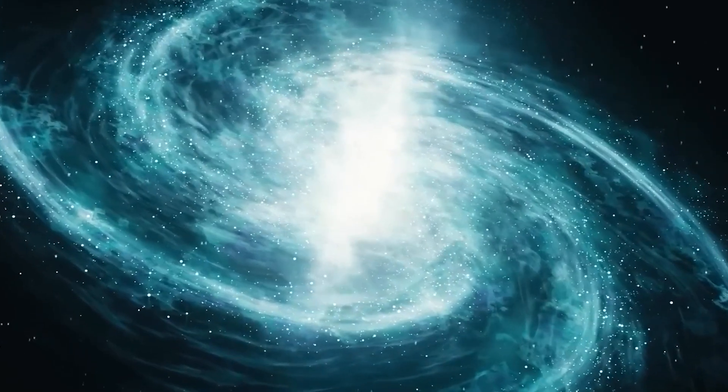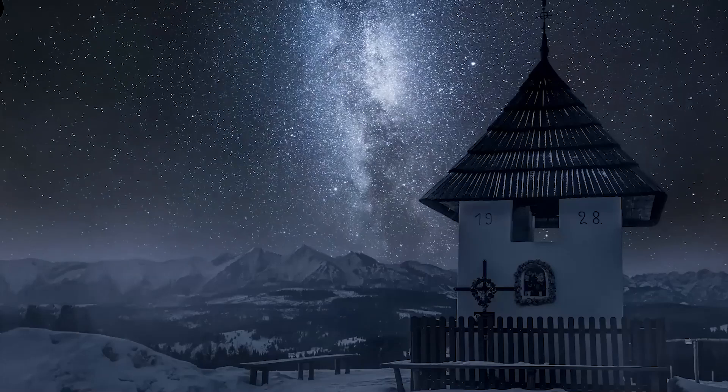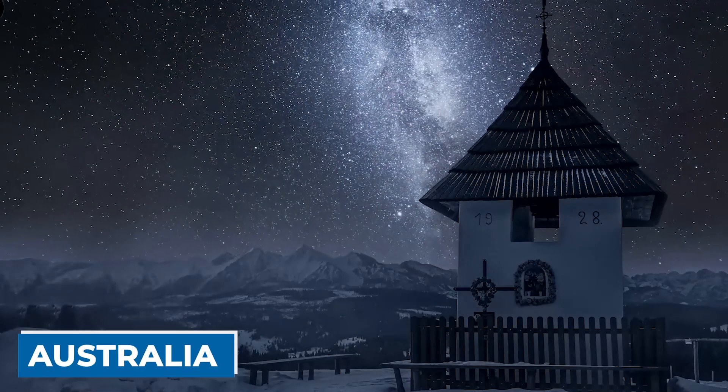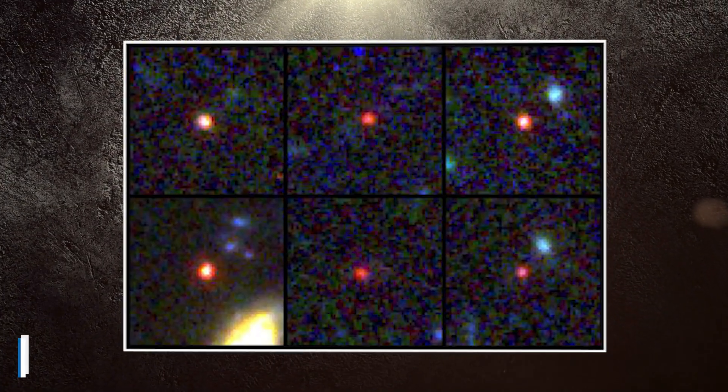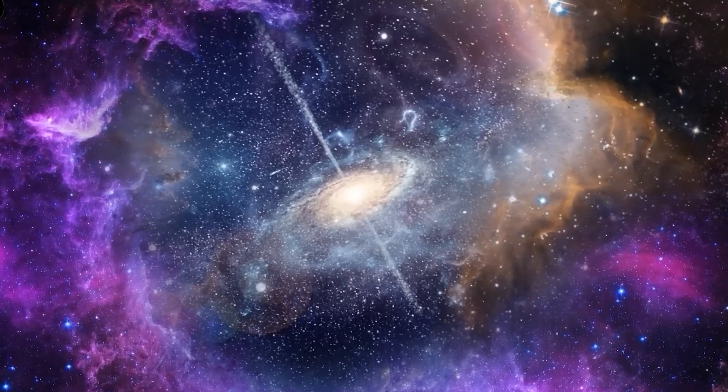Webb talked about the Black Swan Theory, which says that one unexpected event, like when Europeans first saw black swans in Australia, can change everything we thought we knew. He called the galaxies six black swans, because if even one of them turns out to be true, we'll have to change our ideas.